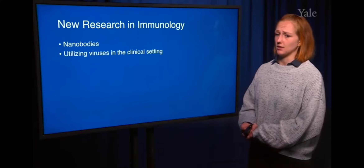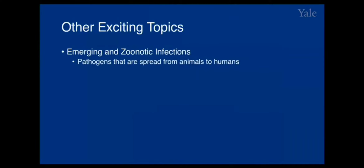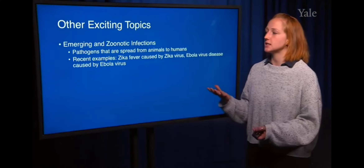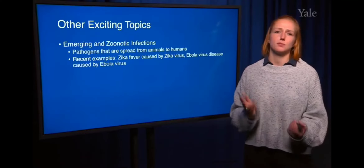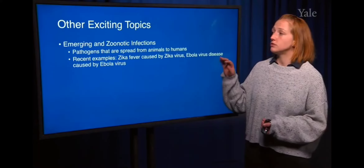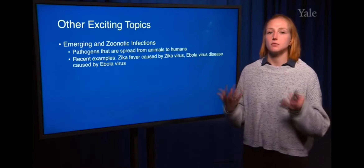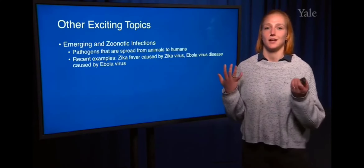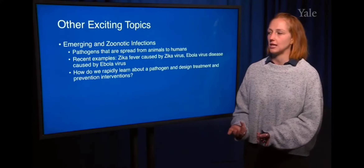First, we have emerging and zoonotic diseases — infections caused by pathogens that spread from animals to humans. Some recent frightening examples were Zika fever caused by Zika virus and Ebola virus disease. These were alarming because of how quickly they entered the human population. When a new zoonotic virus or bacteria that's never been in the human population before, such as Zika or Ebola, spreads very quickly and causes a lot of deaths, it doesn't give researchers and clinicians a lot of time to understand how to treat it.